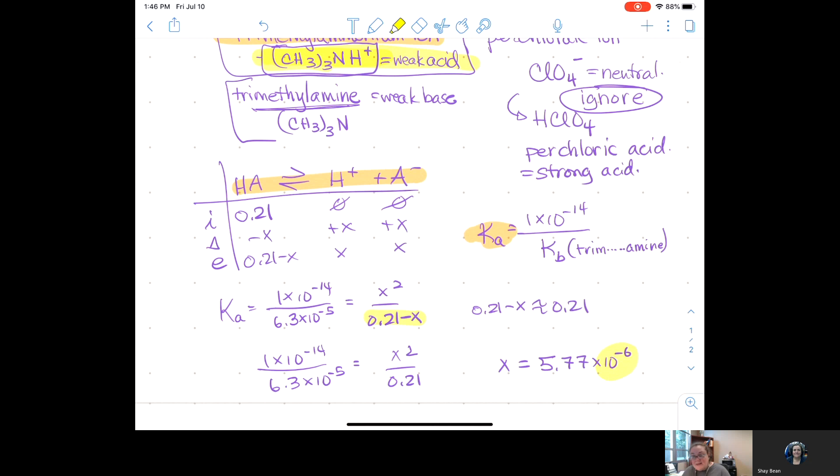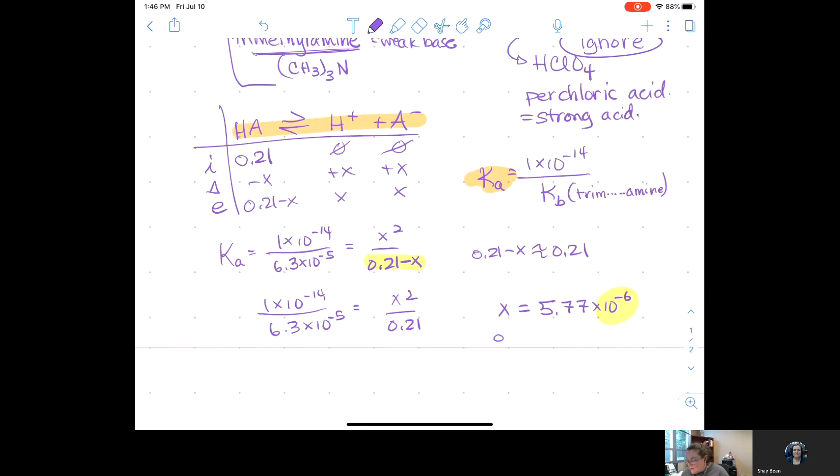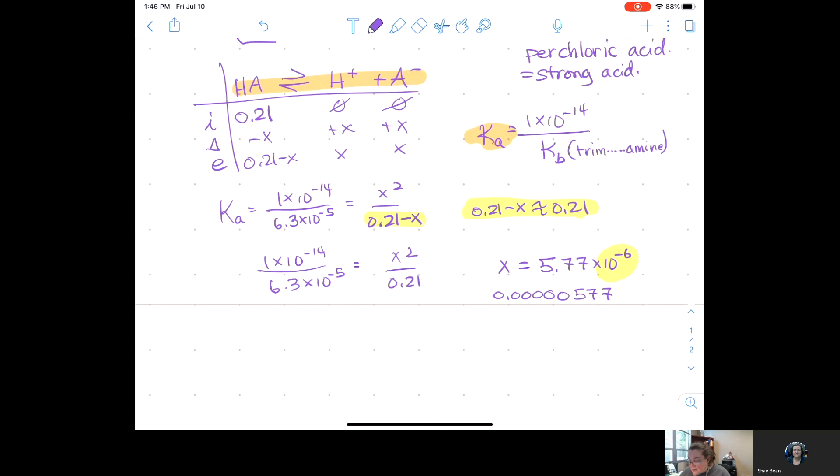And you come up with X equals 5.77 times 10 to the minus 6. Now look at that exponent compared to the ones we've been running into. 10 to the minus 6 is a really small number. That is 0.000005 and change. All right. This is the number that is X. That is definitely very, very small compared to 0.21. So, I'm going to say that approximation is good. I'm not even going to bother to check it. This is clear cut. That approximation works. That X is really, really small. I'm not even going to check it. So, since that's my X, recall that X is the H plus, which means take the negative log of it to get the pH.